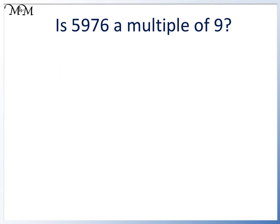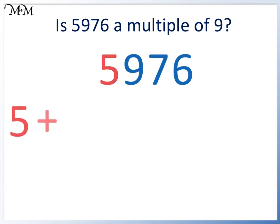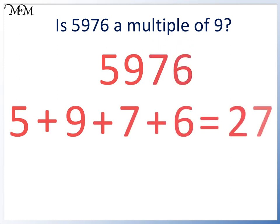Is 5,976 a multiple of 9? We add the digits 5 plus 9 plus 7 plus 6 equals 27. 27 is 3 times 9, and so 5,976 is a multiple of 9.